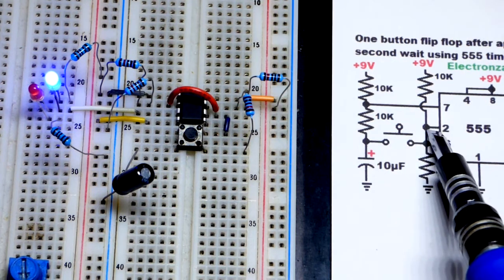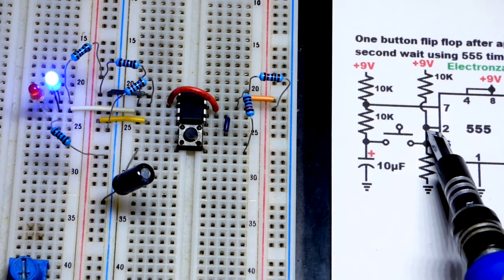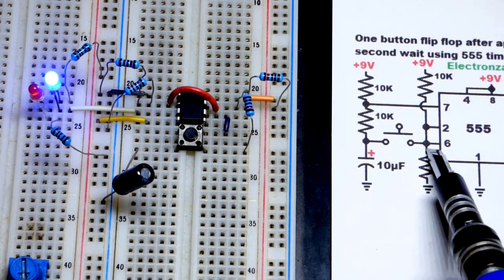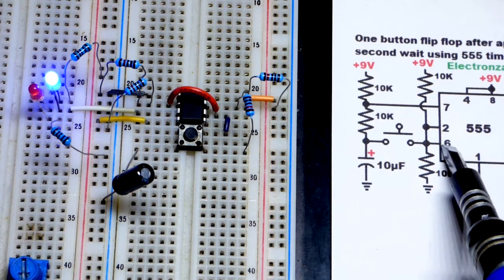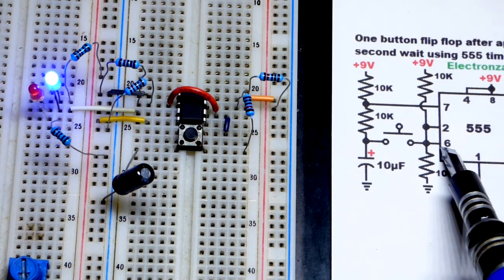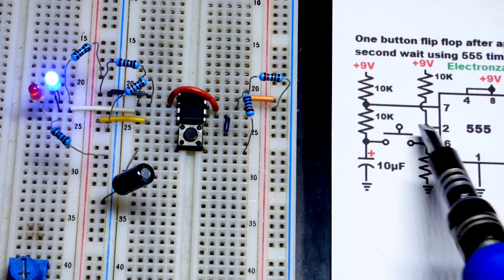So we got that halfway point. We need less than one-third to trigger pin 2, which is the trigger pin. We need more than two-thirds to get the threshold pin to change states right there.